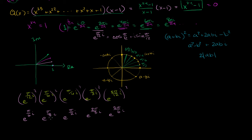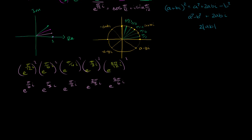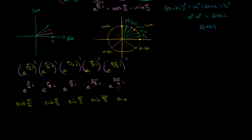Now let's think about the imaginary parts of these squared values. Using Euler's formula, e^(π/6·i) = cos(π/6) + i·sin(π/6), so its imaginary part is sin(π/6). Similarly, the imaginary parts are sin(π/3), sin(π/2), sin(2π/3), and sin(5π/6).